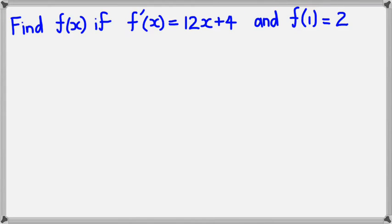Okay, so we want to find f of x, if f dash of x equals 12x plus 4, and f of 1 equals 2. So the whole purpose of this is we're looking for c.